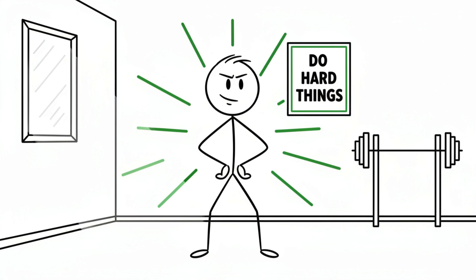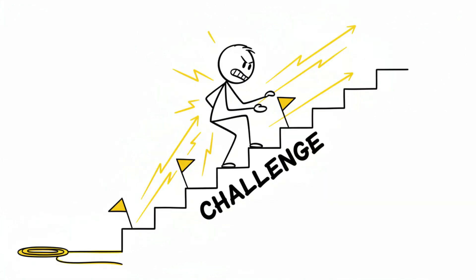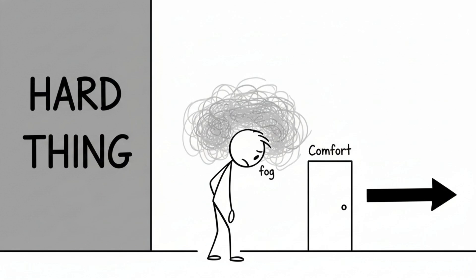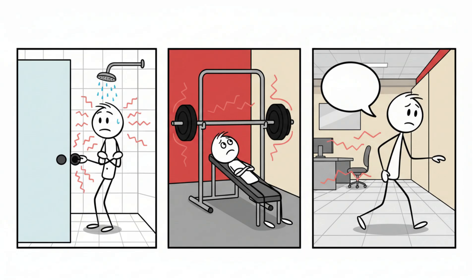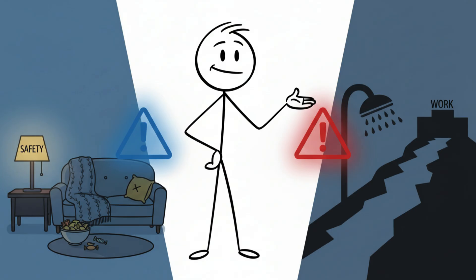Deliberately do hard things. Your brain only adapts when it's challenged. Every time you avoid something difficult, not having a cold shower, not doing a tough workout, avoiding an uncomfortable conversation, you teach your brain that comfort equals safety and discomfort equals danger.